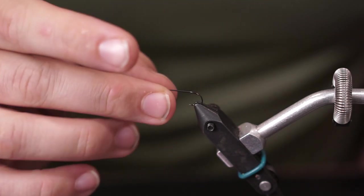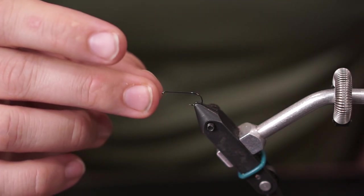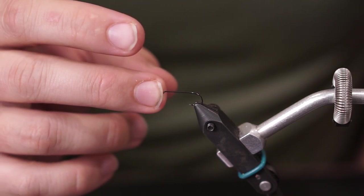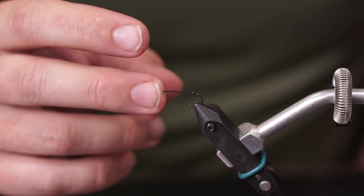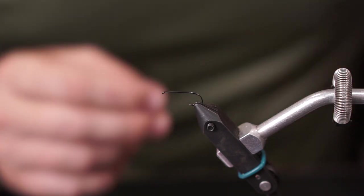So a foam beetle, while a simple pattern, is actually quite a lot of fun to fish for a variety of different species including some of my favorites like brook trout and many different panfish species.